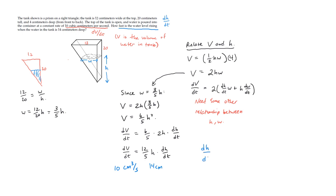dh/dt is going to equal dV/dt over 12/5ths h. And that's going to be 10 over 12/5ths times 14. And that is equal to 10 over, and then 14 times 12, I think, is going to be 168. So 168 fifths.